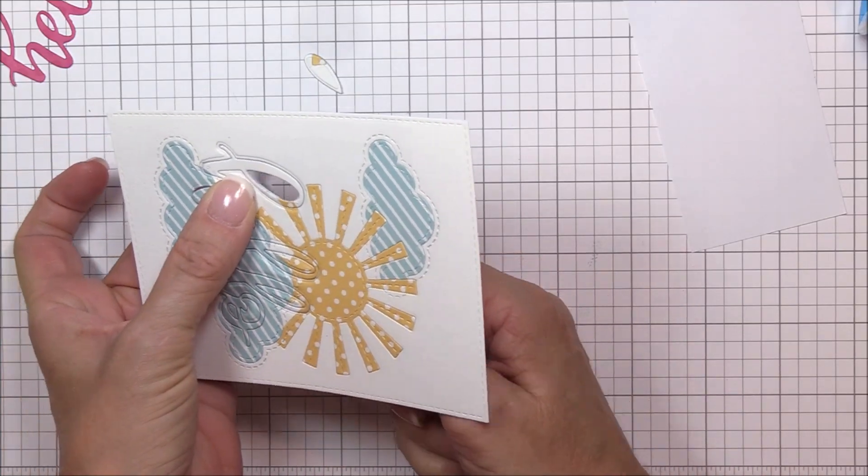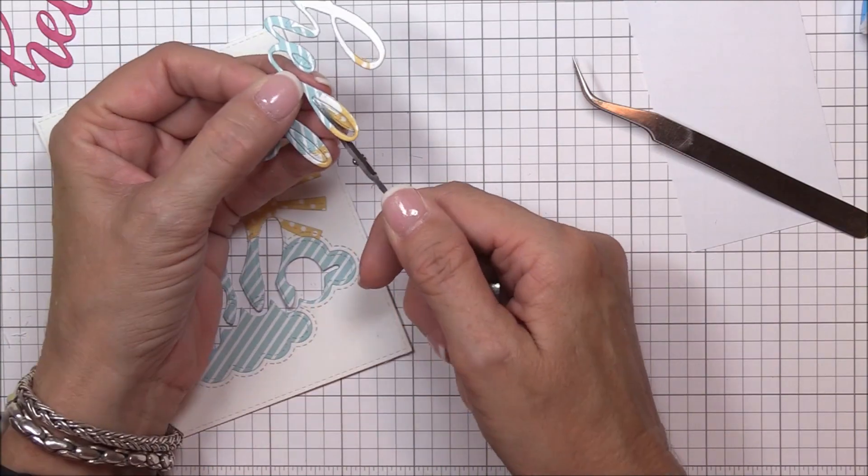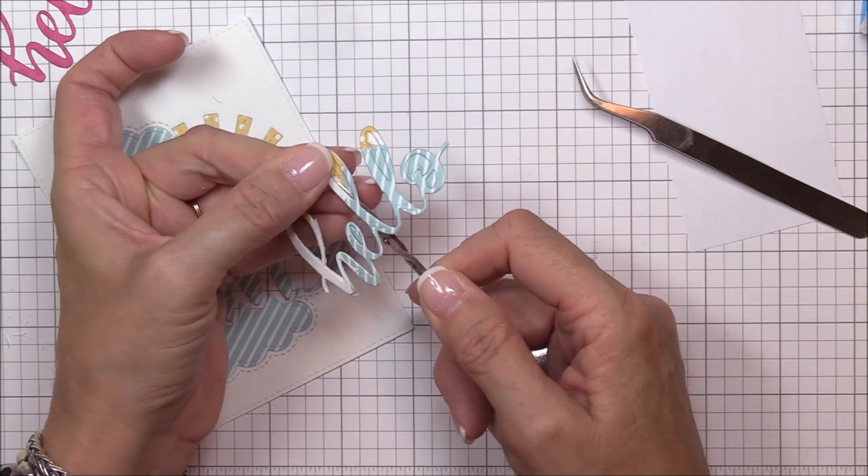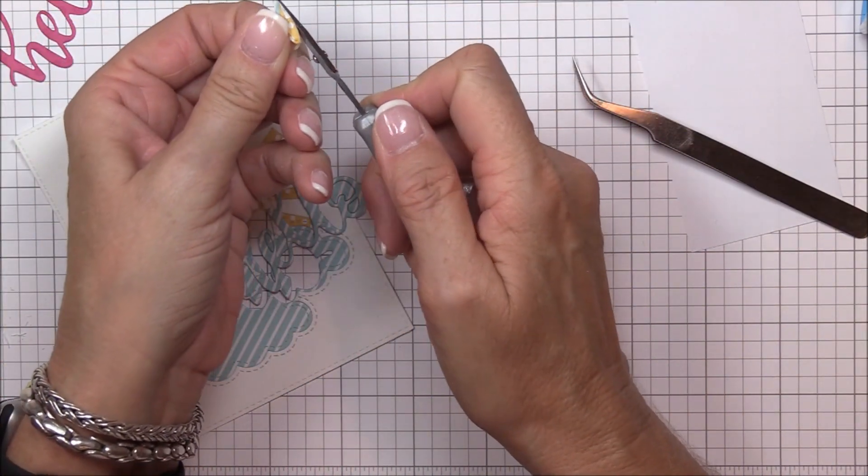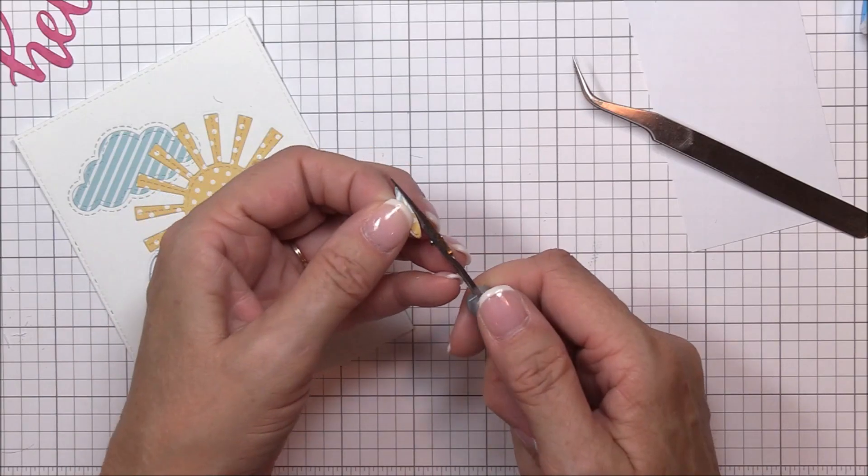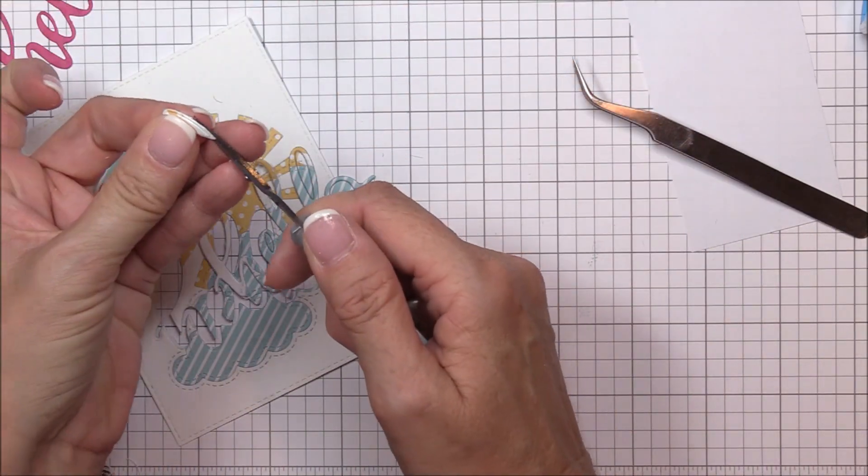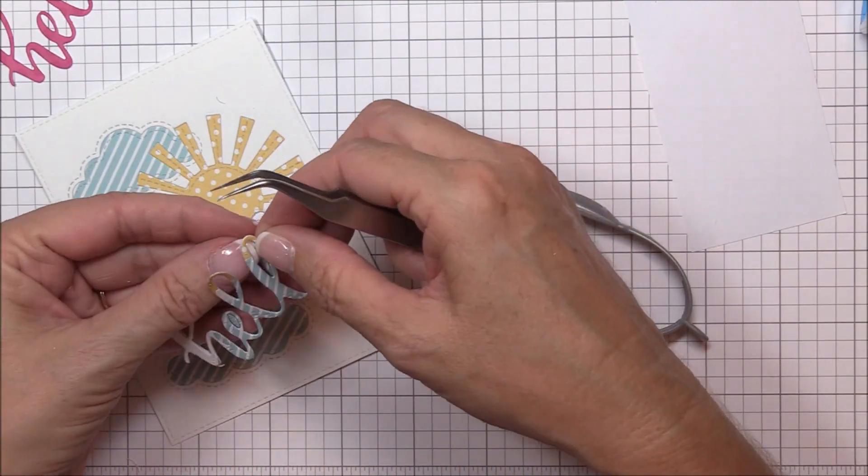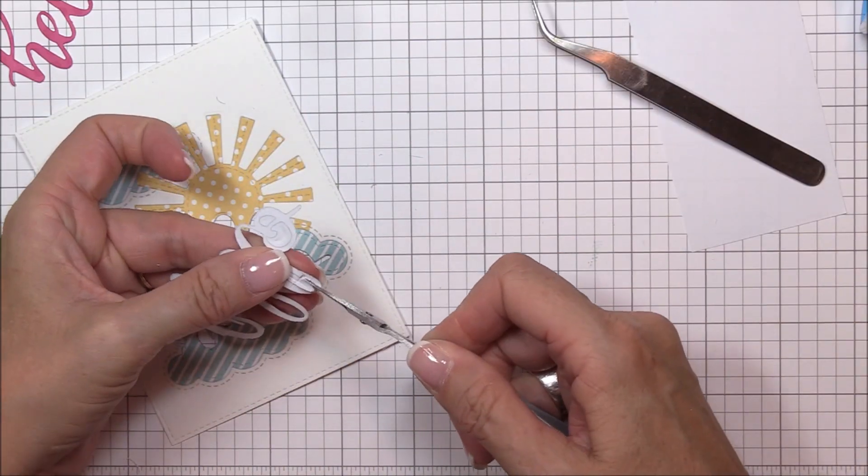Now that I've released that hello word die cut from the image panel, I can use my detail scissors to remove the rest of the inside portions of the die cut. Be sure to set those aside someplace safe because we'll need them in a minute. Here I'm just cleaning up the outside edges of those interior pieces with my scissors so they'll fit perfectly. While I continue to remove those necessary inside pieces, let's chat more about the possibilities for inlaid die cutting.